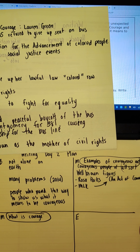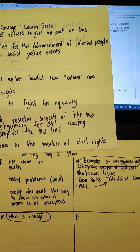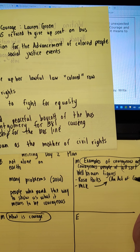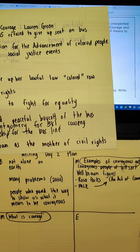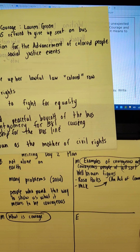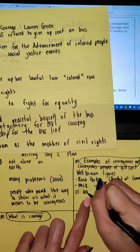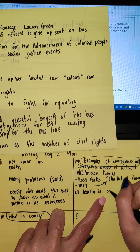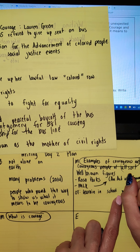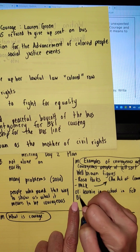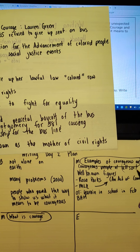So that's my text evidence. What would be my OT to this? My OT could be learning in school — in February, Black History Month. Okay, so that's going to be my OT for that one.